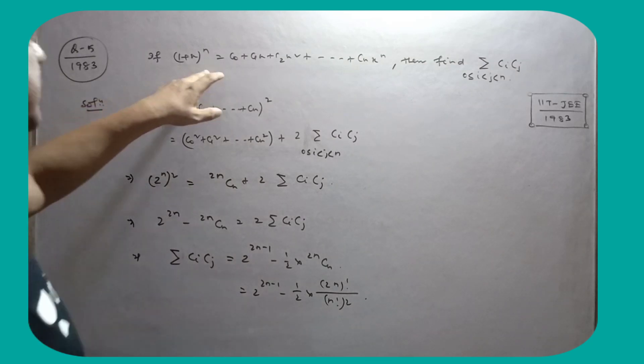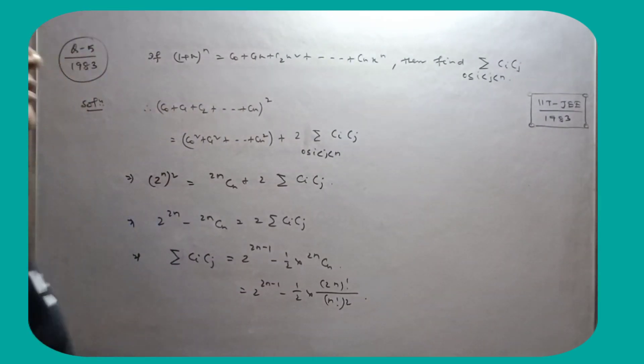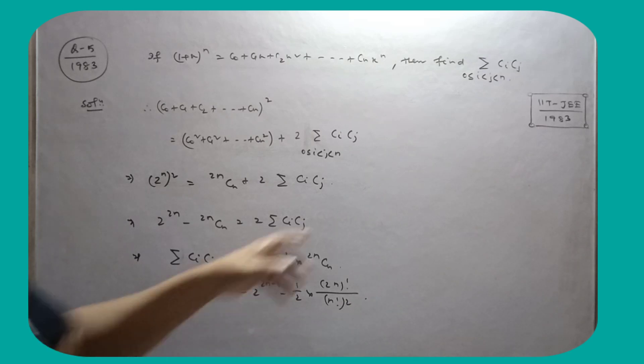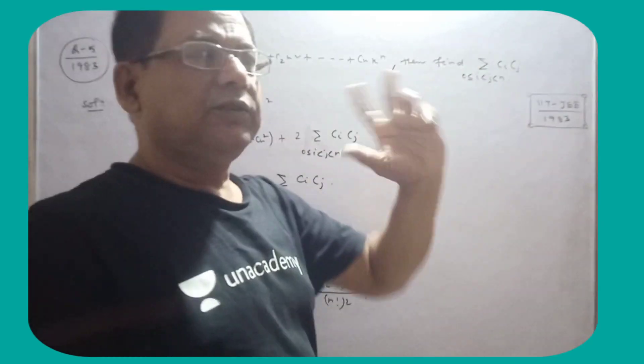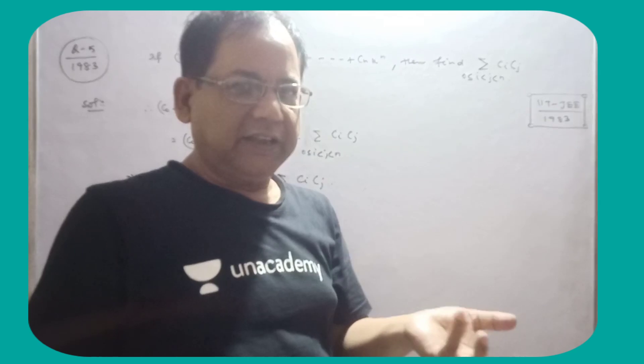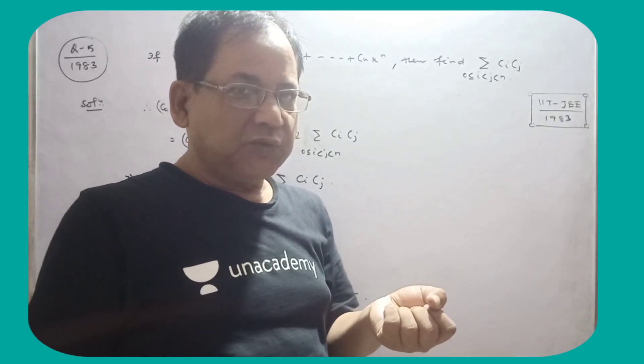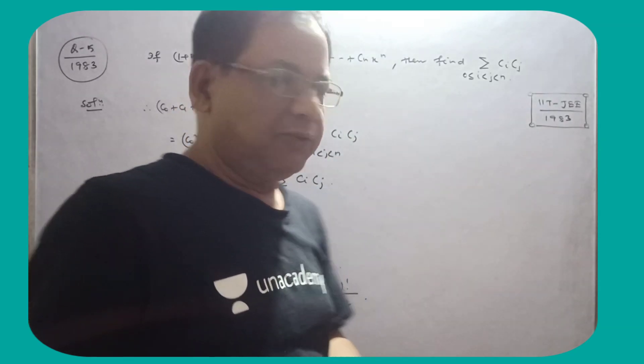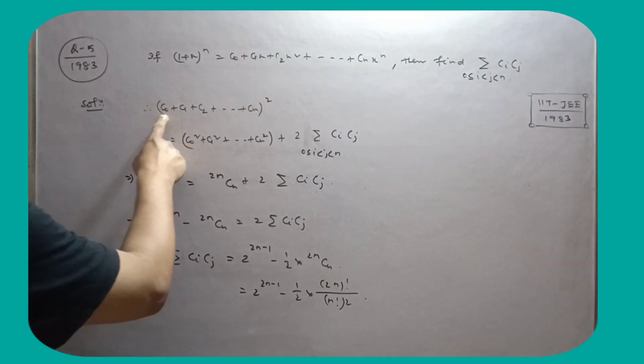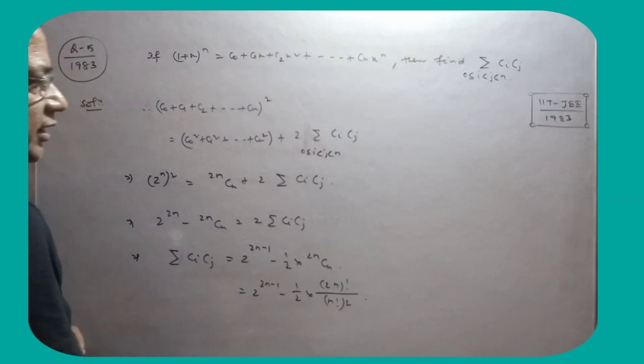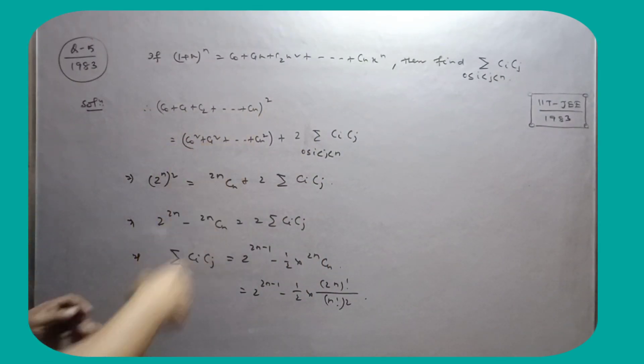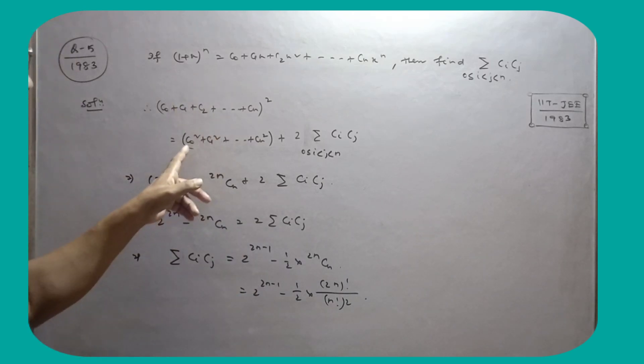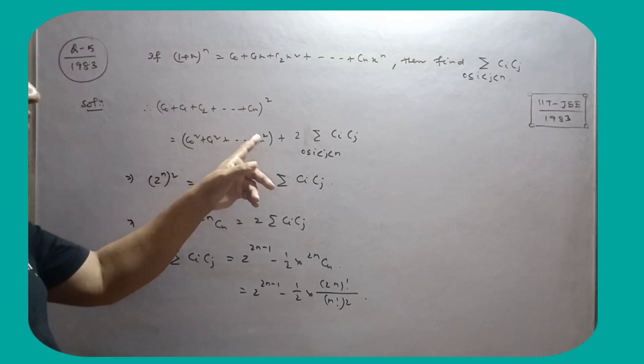If 1 plus x to the power n equals this, then find summation CiCj. We need to find the value when C0, C1, C2 to Cn squared. The sum of binomial coefficients is 2 to the power n, and C0 squared plus C1 squared plus Cn squared equals 2nCn. You need to keep this in your mind.